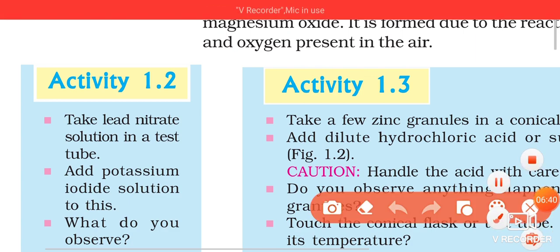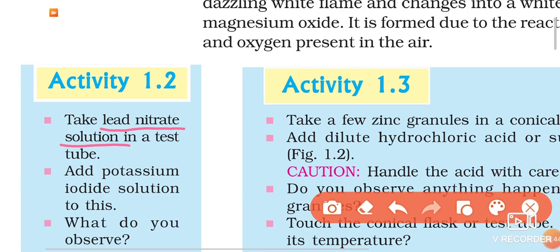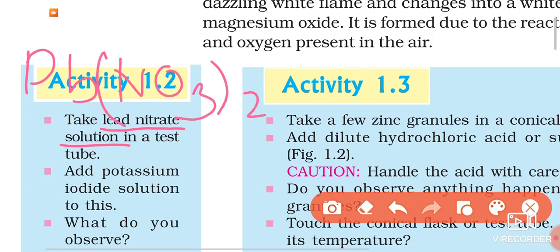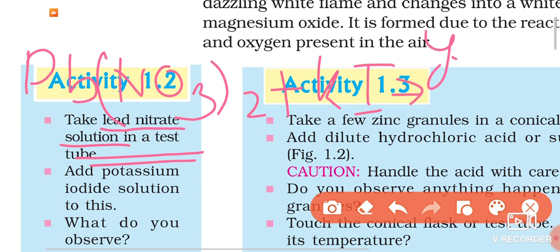Activity number 1.2: We take an aqueous solution of lead nitrate — Pb(NO₃)₂ — which is a very clear solution in one test tube. In another test tube, we take an aqueous solution of potassium iodide. As long as the two solutions are separate, there is no chemical reaction. But when the two solutions are mixed, a yellow colored solid starts forming and settling at the bottom of the test tube.